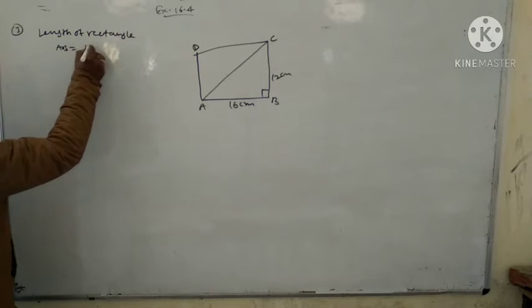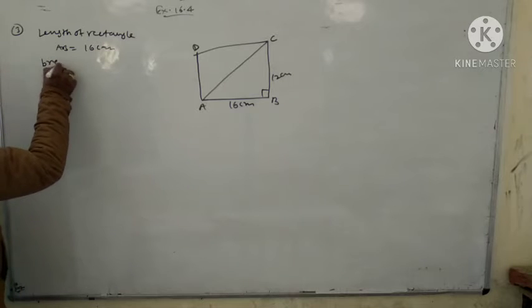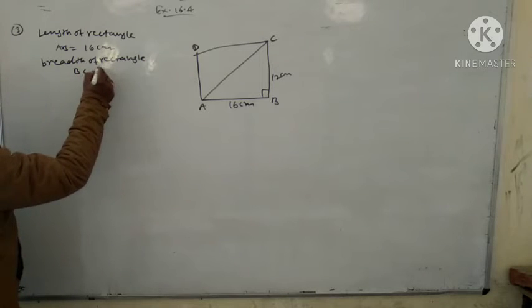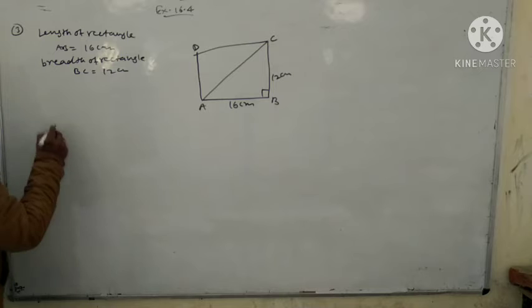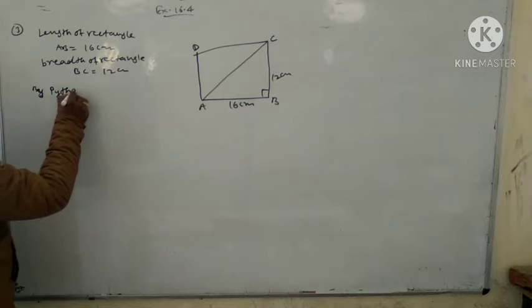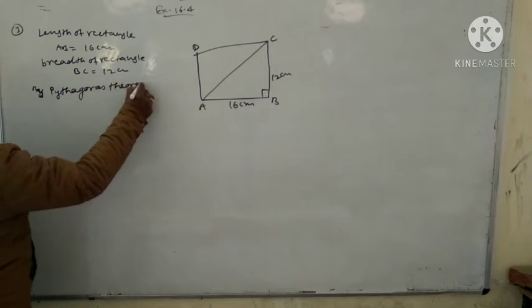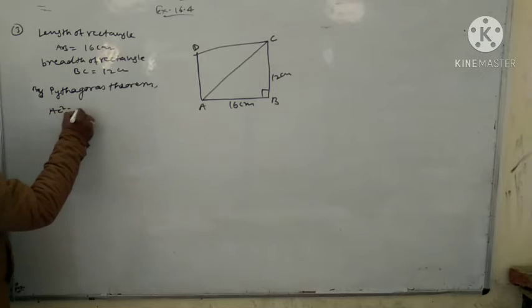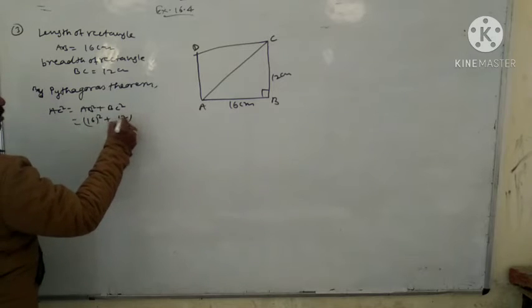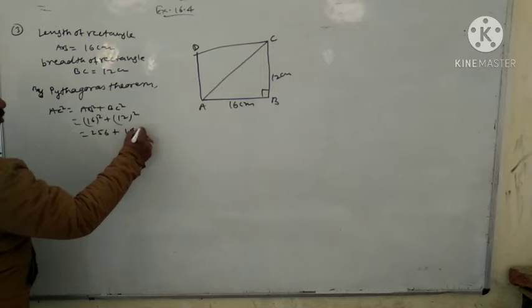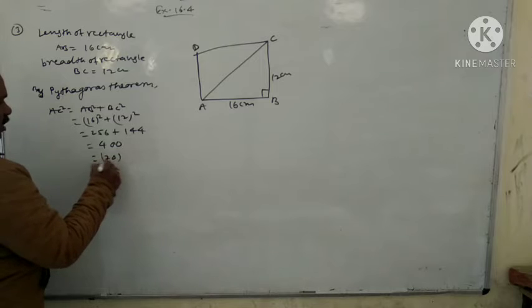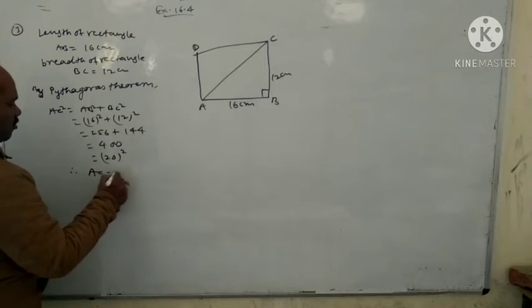AB equals 16 centimeter, BC equals 12 centimeter. By Pythagoras theorem: AC square equals AB square plus BC square. So AC square equals 16 square plus 12 square, which is 256 plus 144, equals 400. Therefore AC equals 20 centimeter. The diagonal of the rectangle is 20 centimeter.